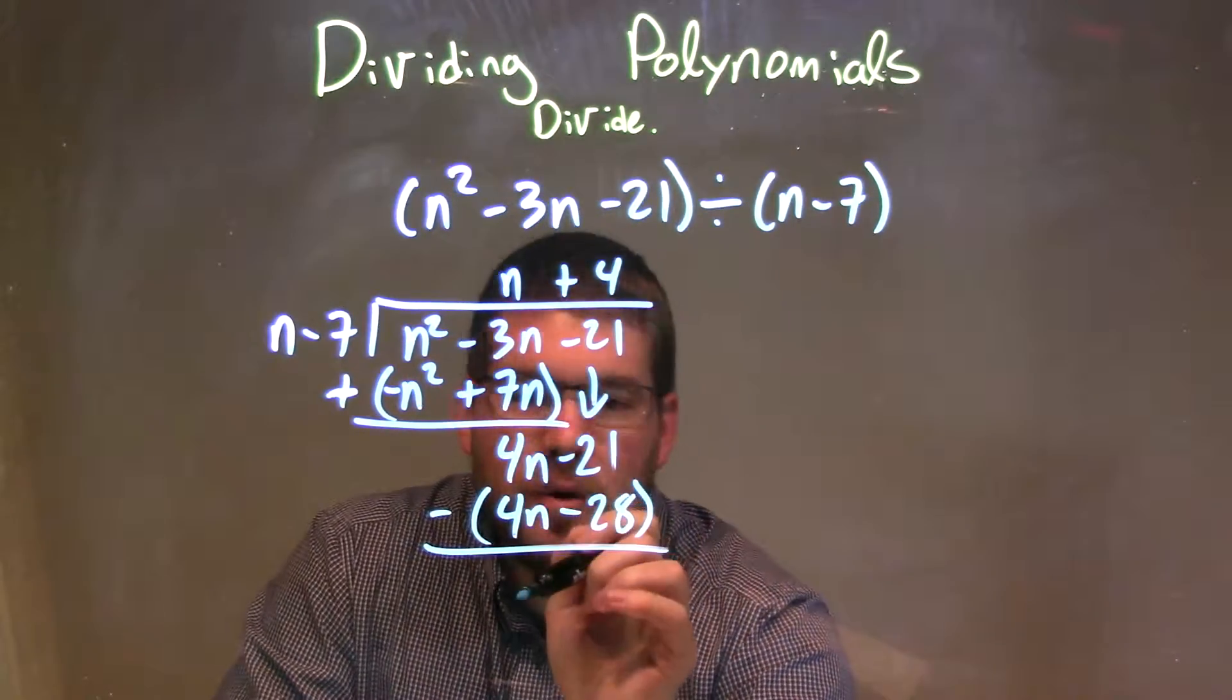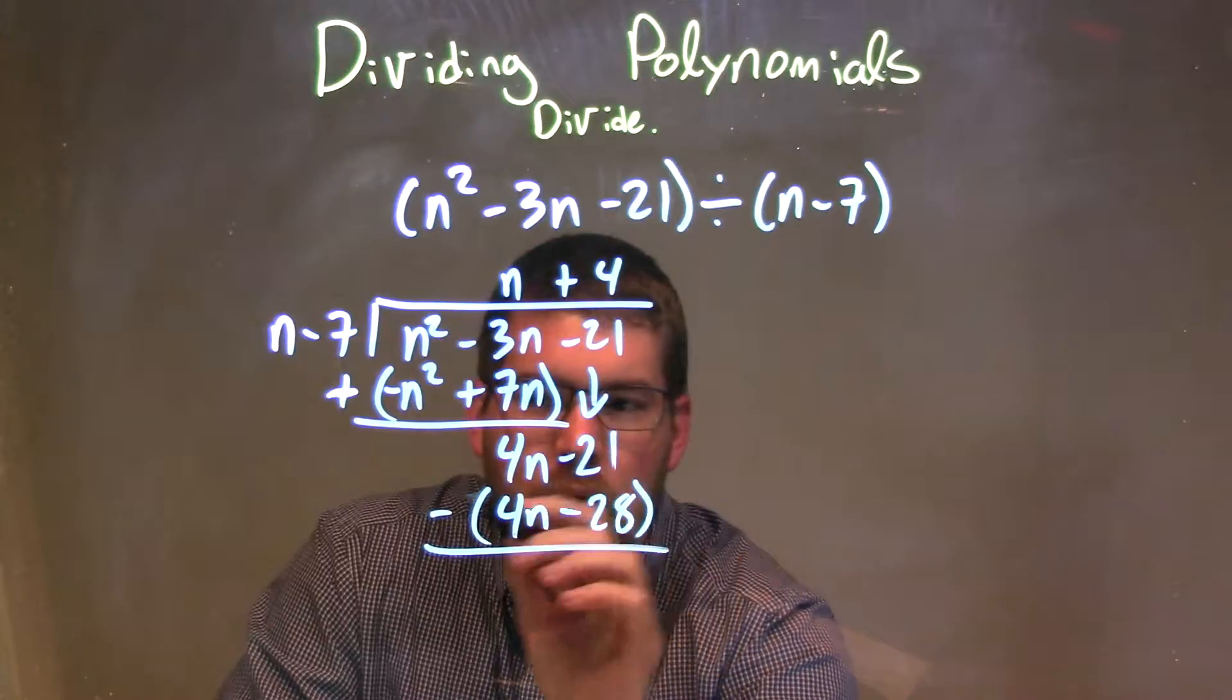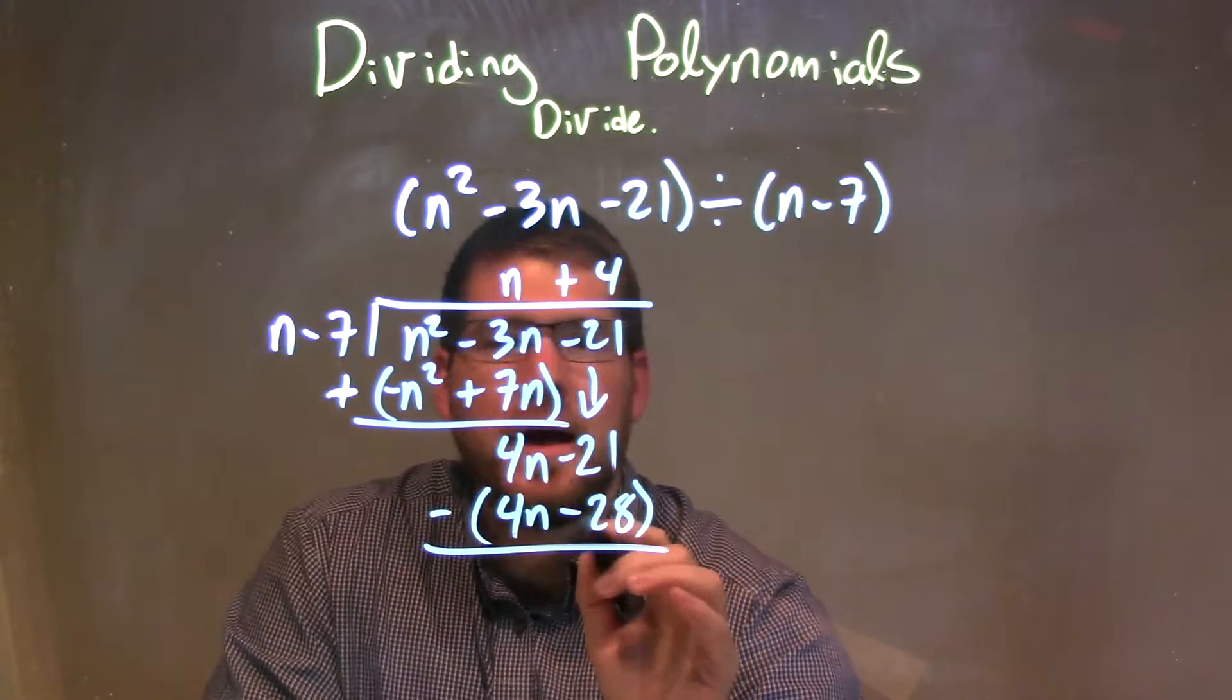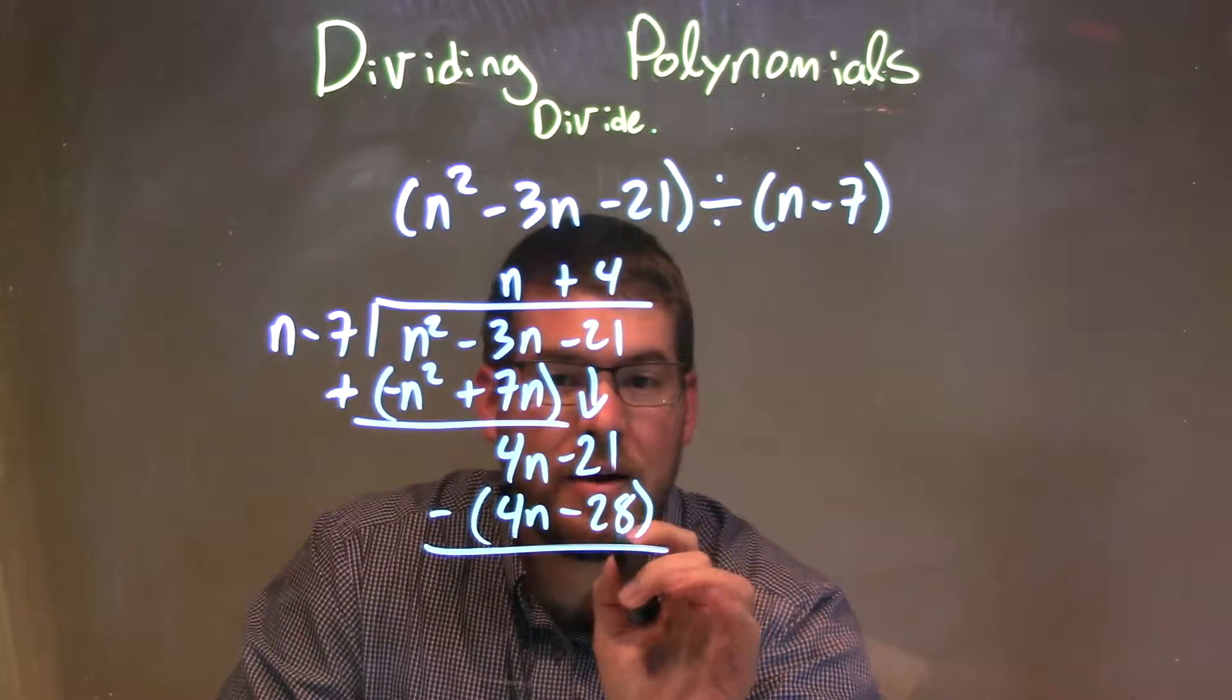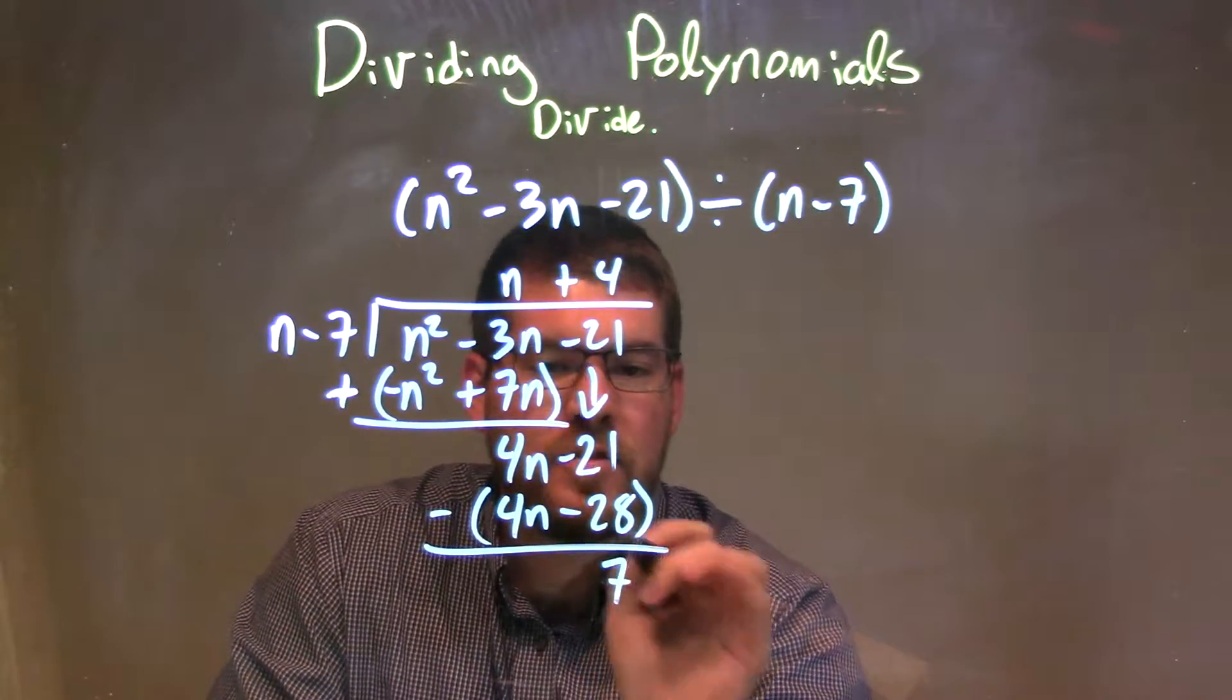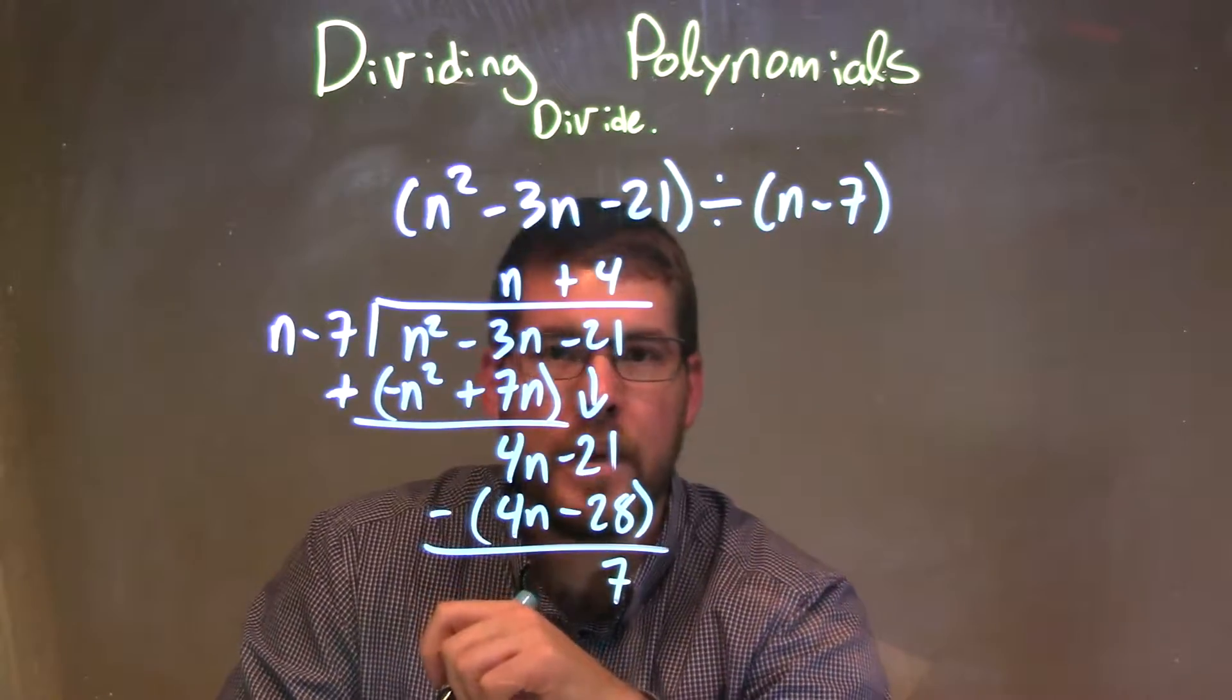Well, 4n minus 4n is 0, and then negative 21 minus a negative 28 is like adding a positive 28, and this time I won't distribute the minus. We need to practice. Try it. Go for it and see it. But we have a positive 7 there, okay? So that positive 7 is our remainder.